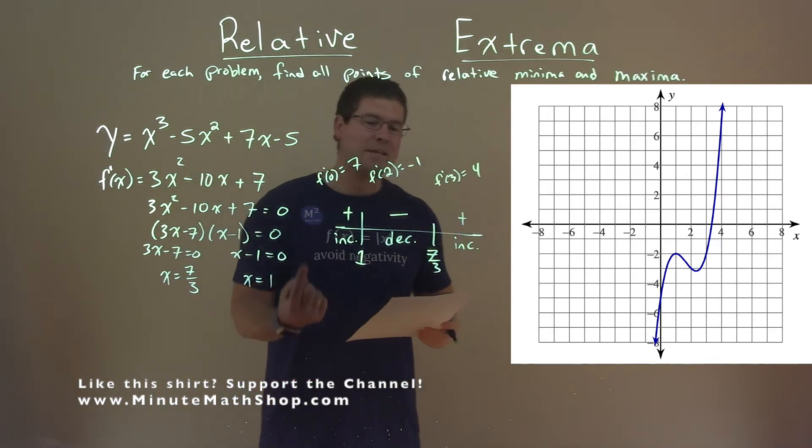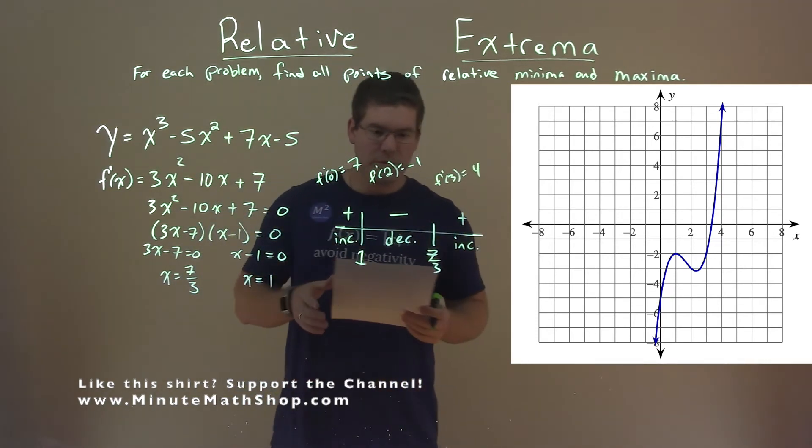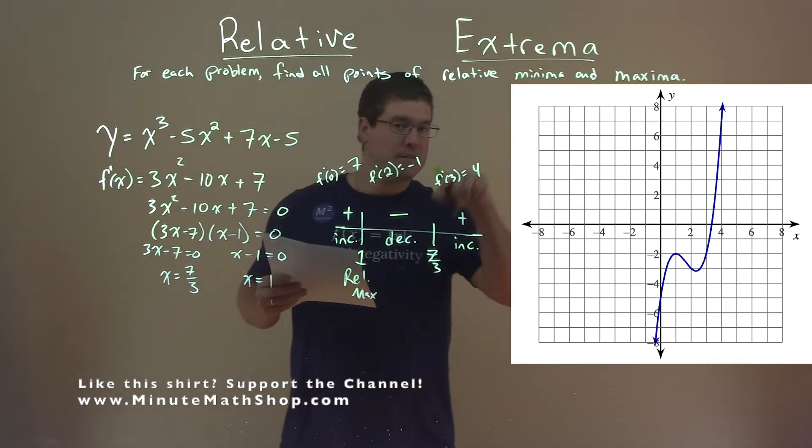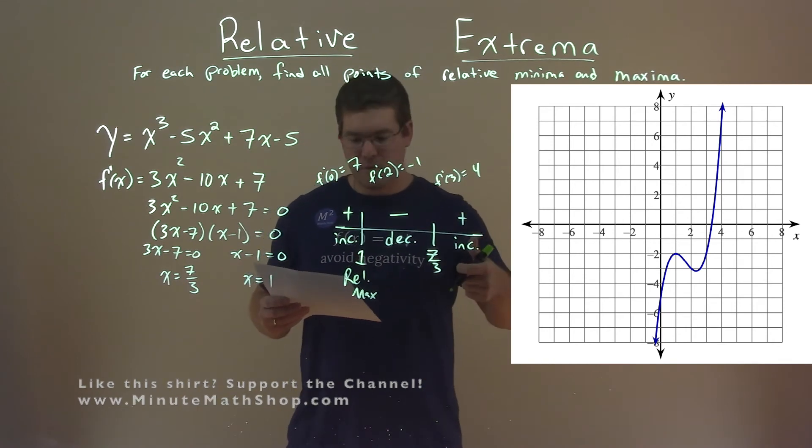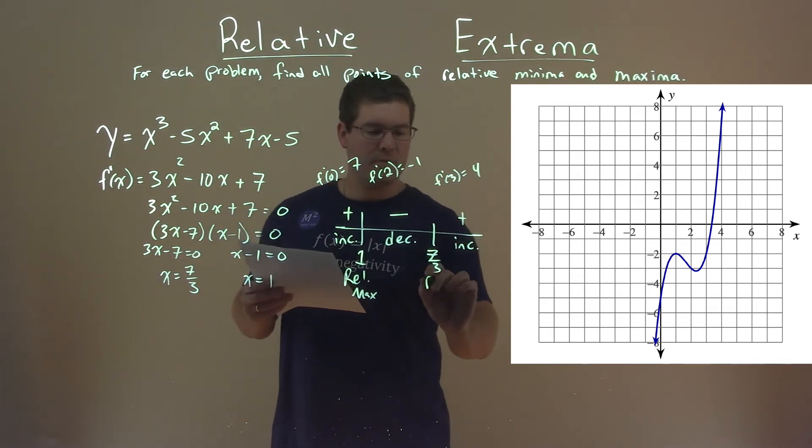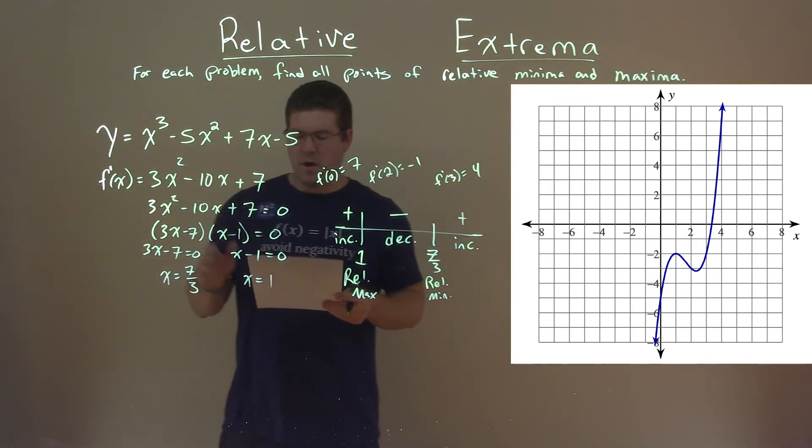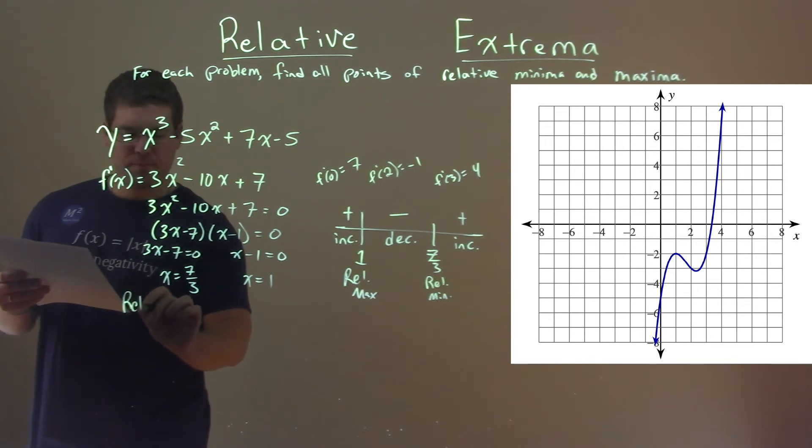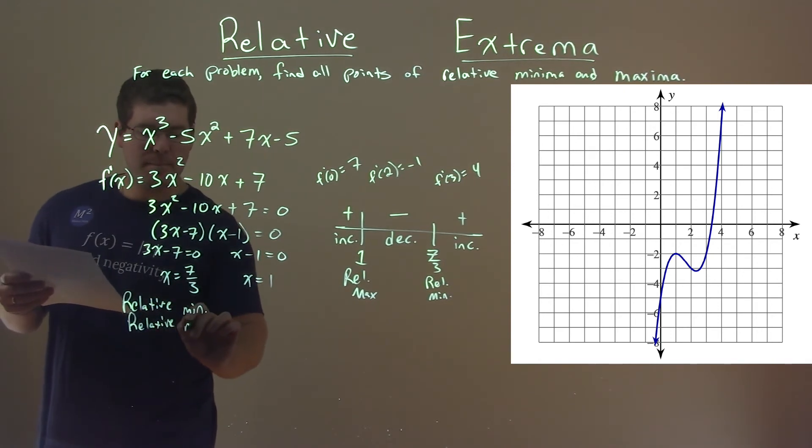So our function is increasing, then it's decreasing. We have a relative max there. And the function is decreasing, then increasing. We have a relative minimum there. And so I plug those points in. I'll label it here: a relative minimum and a relative maximum.